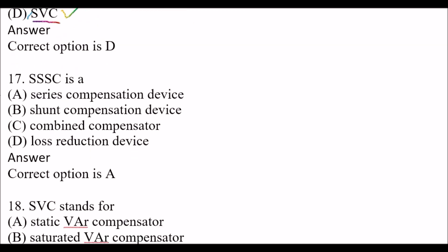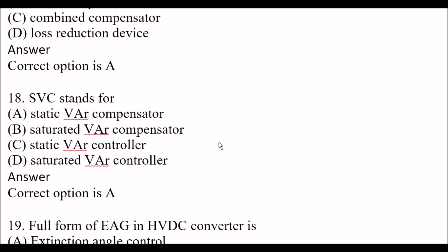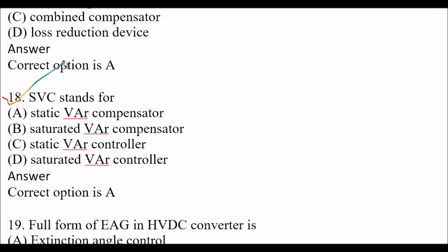Next question: TCSC is — Option A: Series compensation device. Option B: Shunt compensation device. Option C: Combined compensator. Option D: Loss reduction device. The right answer is Option A, Series compensation device. Next question: SVC stands for — Option A: Static VAR Compensator. Option B: Saturated VAR Compensator. Option C: Static VAR Controller. Option D: Saturated VAR Controller. The right answer is Option A, Static VAR Compensator.